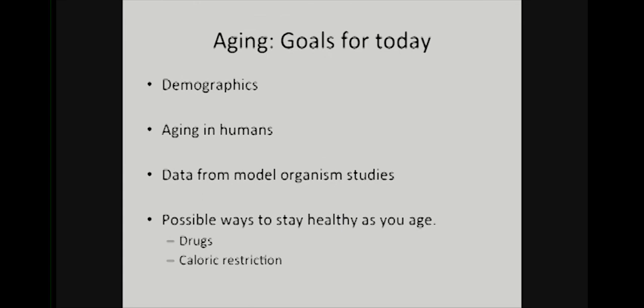So today this is what we're going to talk about. We're going to first talk about the demographics of aging and why aging is going to be something that you as bioengineers will encounter as a condition you'll have to think about going forward. We'll talk about the molecular interactions that go into aging in humans, and a lot of that is stuff we've learned from model organism studies. Then we'll talk about some possible ways to stay healthy as you age. Two biggest things are drugs that you can take to actually be healthy as you grow older, and caloric restriction, which is something that's actually very proven in animal models but controversial when you get to humans.